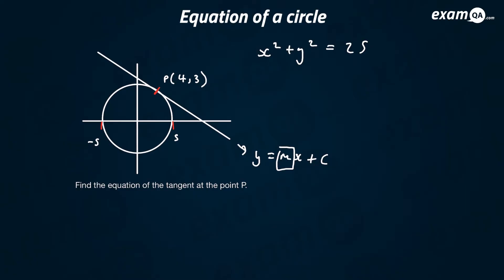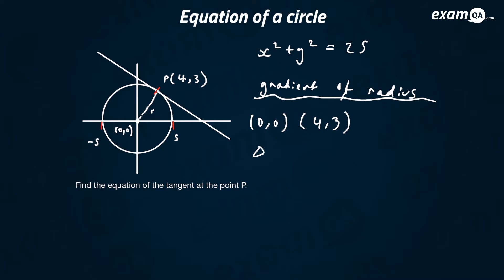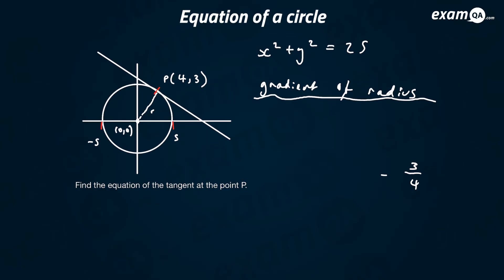The first thing I'm going to work out is m — the gradient of the tangent. To work out the gradient of a tangent on a circle, I'm first going to work out the gradient of the radius that goes through P. The centre is (0, 0) and P is (4, 3). Using change in y over change in x: 3 minus 0 over 4 minus 0, the gradient of the radius is 3 over 4.